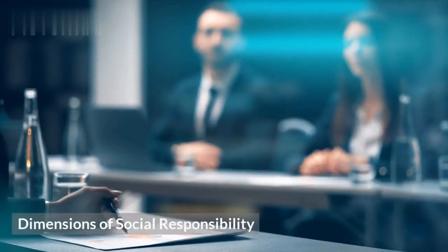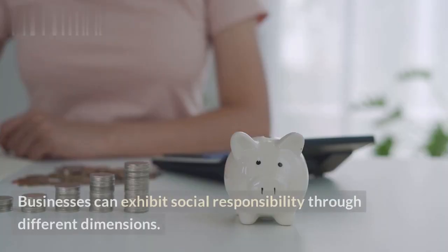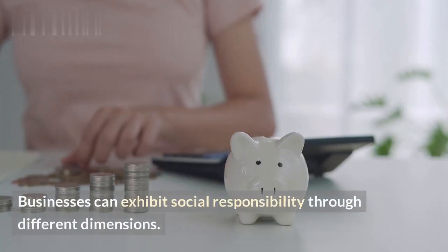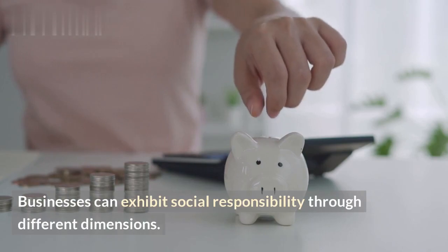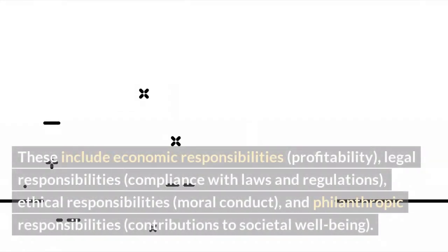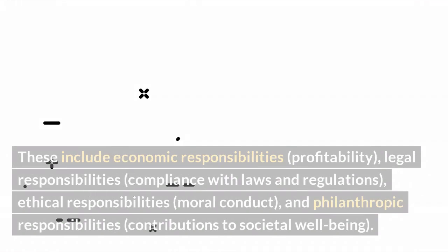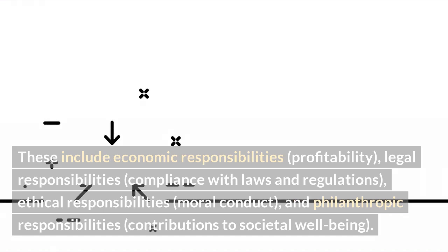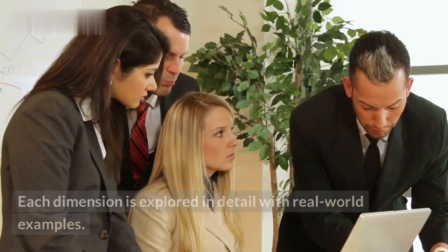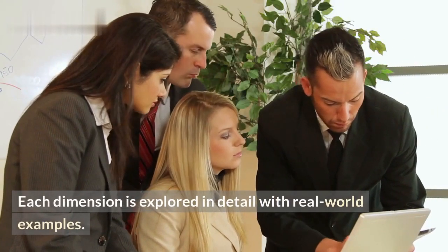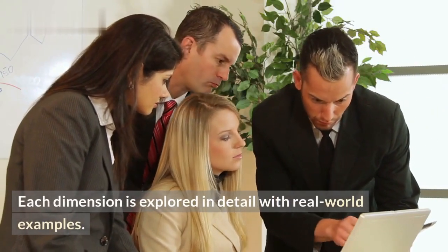Dimensions of social responsibility. Businesses can exhibit social responsibility through different dimensions. These include economic responsibilities (profitability), legal responsibilities (compliance with laws and regulations), ethical responsibilities (moral conduct), and philanthropic responsibilities (contributions to societal well-being). Each dimension is explored in detail with real-world examples.